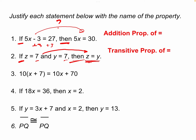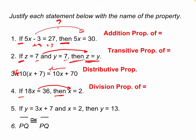Number three: 10x plus 7 equals 10x plus 70. We can think about this as if and then. If 10x plus 7 equals 10x plus 70, how do we go from the if to the then? We use the distributive property. Number four: if 18x equals 36, then x equals 2. How do we get from hypothesis to conclusion? We divided both sides by 18. Therefore, the answer is the division property of equality.